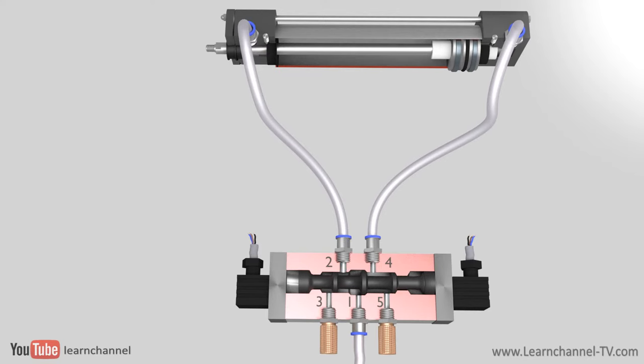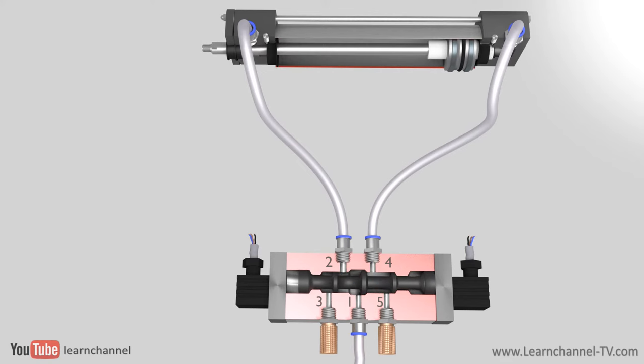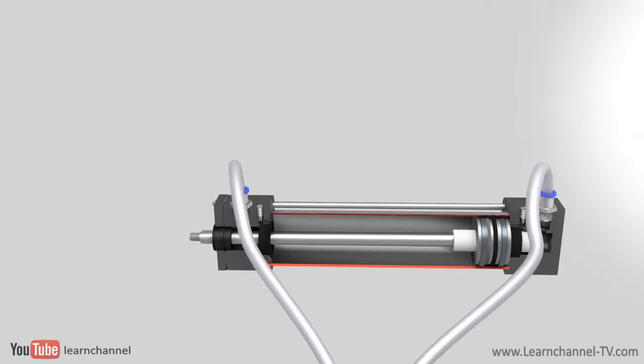The wave valve directs the compressed air on port one to the air ports of the cylinder. Exhaust air from the cylinder is directed to exhaust ports three and five with these pneumatic mufflers attached.